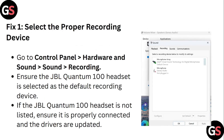Step 1: Select a proper recording device. Go to Control Panel, Hardware and Sound, then Sound and Recording. Ensure the JBL Quantum 100 headset is selected as the default recording device. If the JBL Quantum 100 headset is not listed, ensure it is properly connected and drivers are updated.